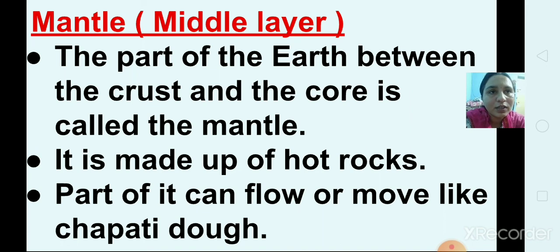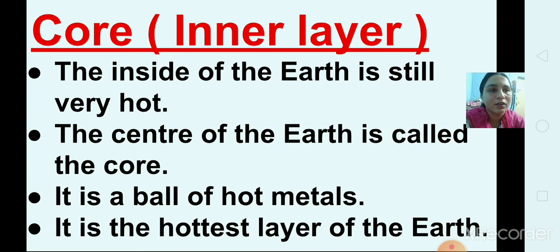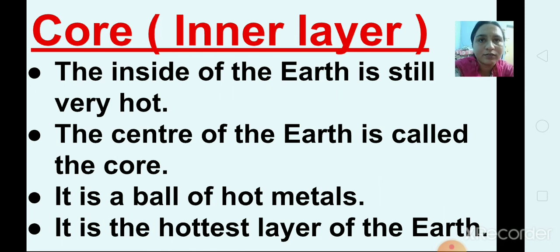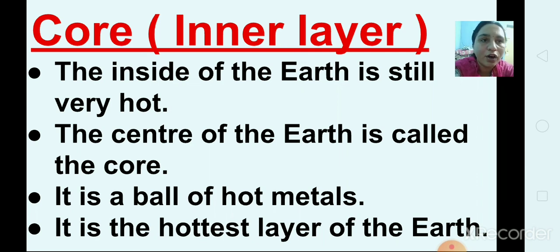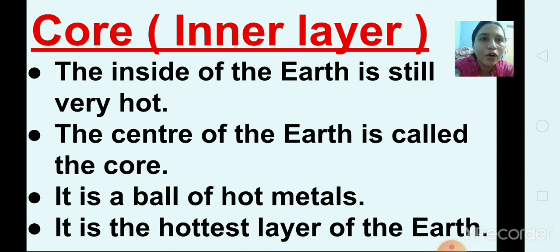Core comes after mantle. The core is the inner layer of the earth — this is the central portion, the center part of the earth. It comes just below the mantle. It is the hottest layer of the earth. Inside the earth it is still very hot. The center of the earth is called the core — it is a ball of hot metals and it is the hottest layer.